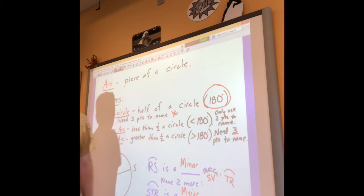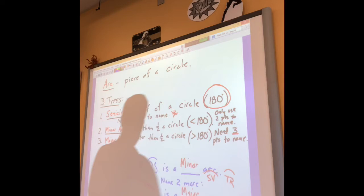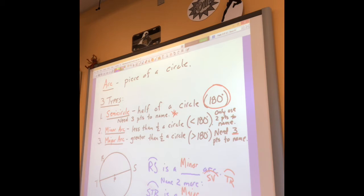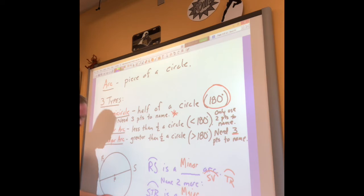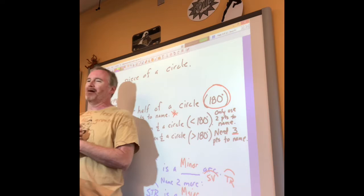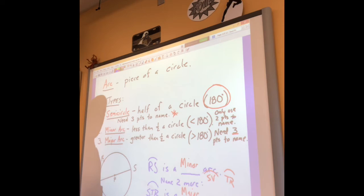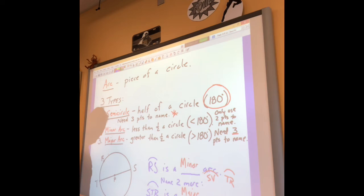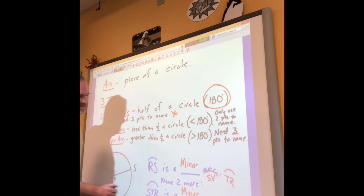Rick Grimes names another major arc: TRV. Here's T, R, V - does it go more than halfway? It sure does, so TRV is definitely a major arc. Shane Walsh names another: VRS. V all the way around to R - that's about halfway - and it keeps going all the way to S. So VRS is probably the biggest arc in this picture and is definitely a major arc.